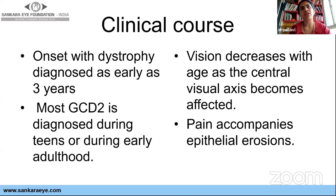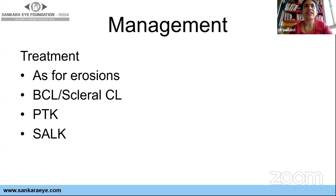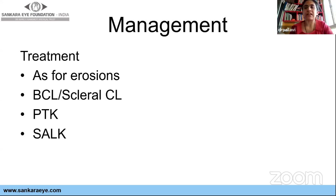Granular dystrophy can appear as early as age three to ten years, with watering and photophobia. Vision is often good in teens. As age progresses, the visual axis becomes affected and pain accompanies erosions. Treatment: contact lenses for erosions, and PTK or DALK are good options. Importantly, 80–90% of these patients do not need surgical intervention because they maintain bilateral vision of around 6/18, with contact lens correction achieving 6/12 or even 6/9.